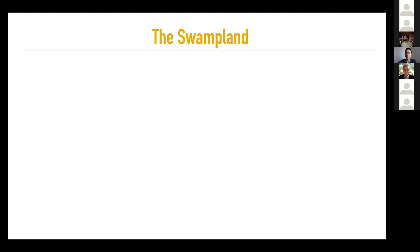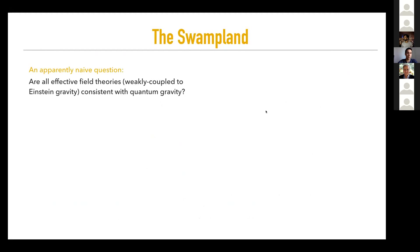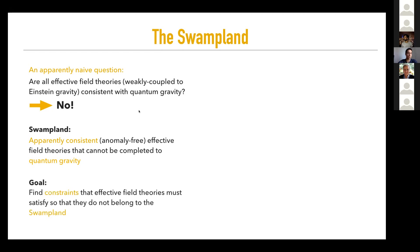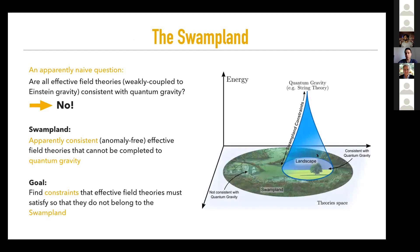The Swampland program, in my opinion, comes from a maybe apparently nice question: are all effective field theories, weakly coupled to Einstein gravity, consistent with quantum gravity? We believe the answer is no, and therefore we define the Swampland as those apparently consistent theories that cannot be completed to quantum gravity. The aim of the program is to find those constraints that the theories need to satisfy in order not to belong to the Swampland.